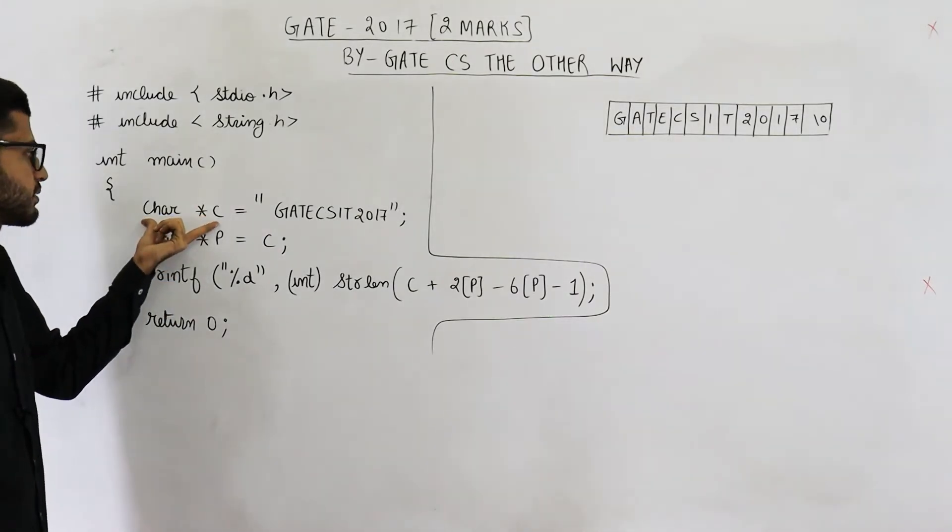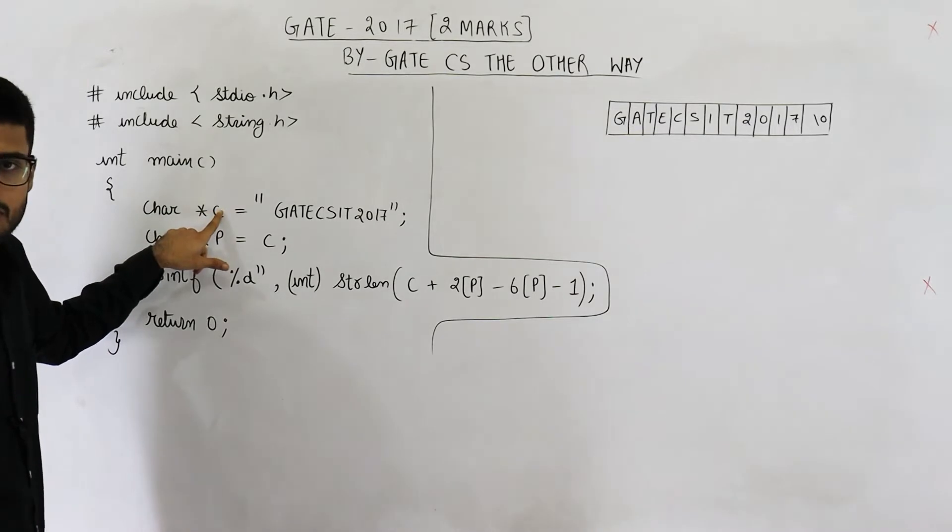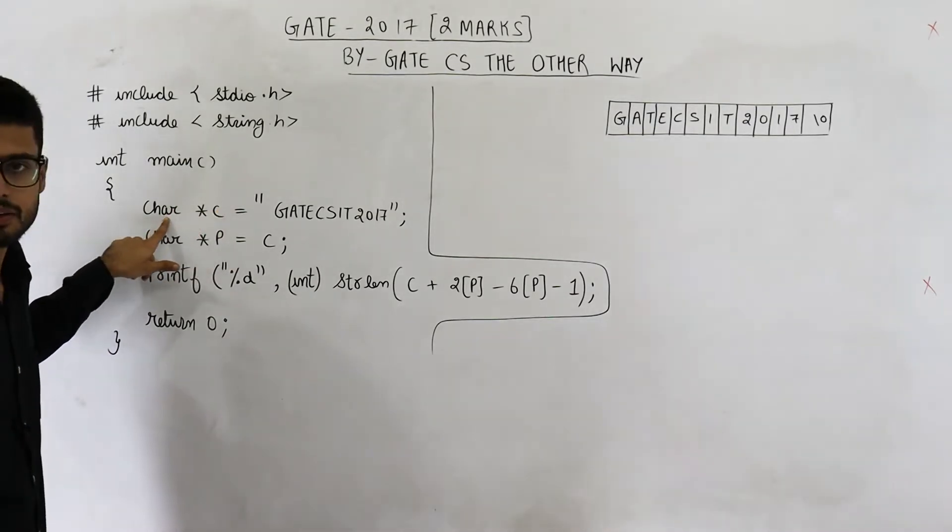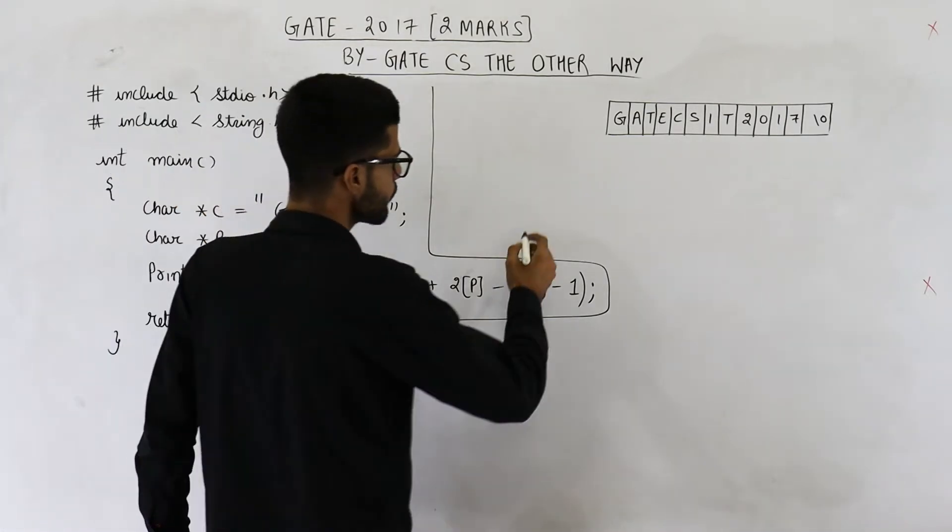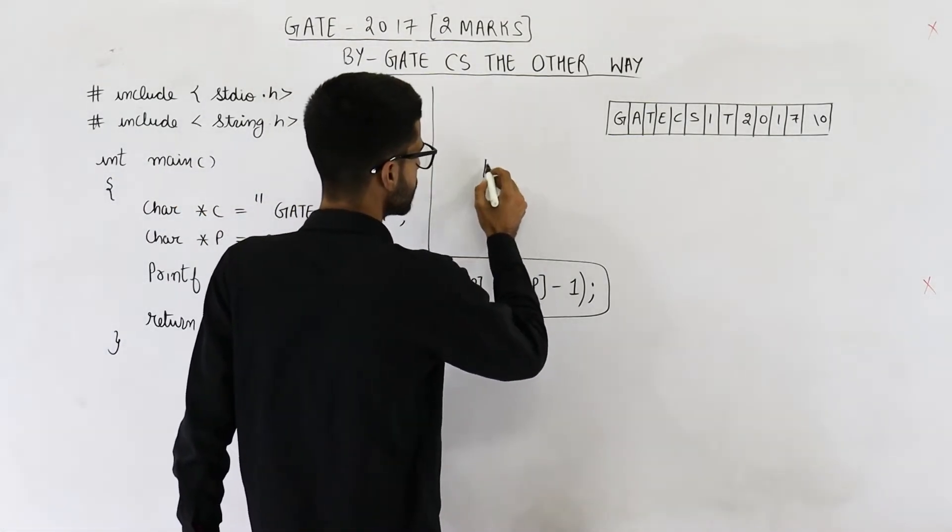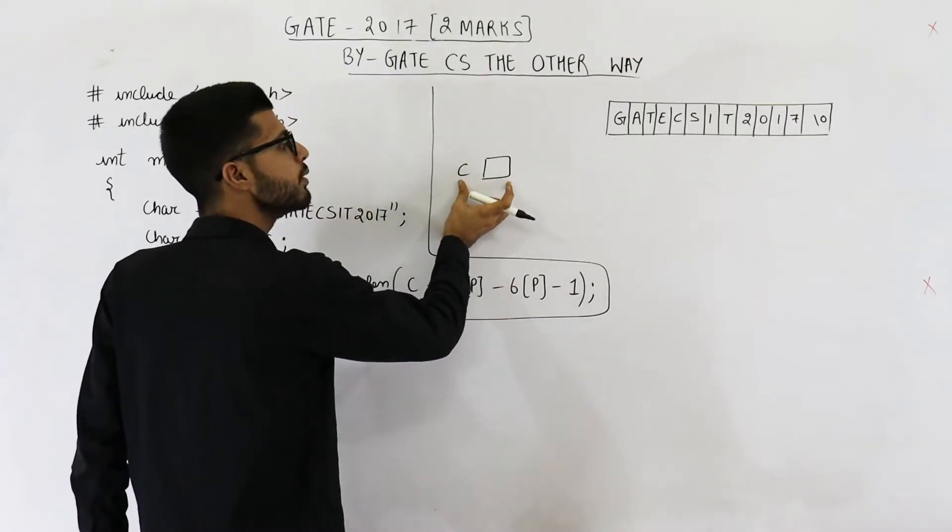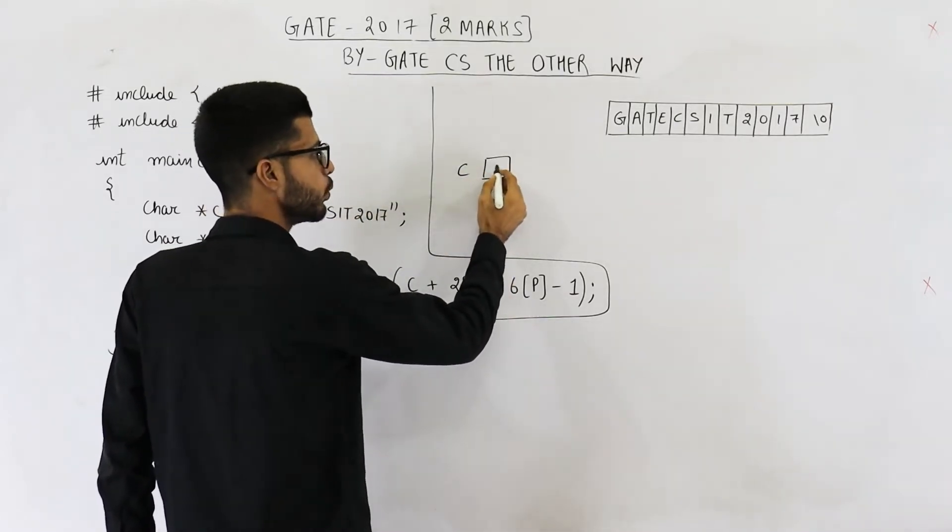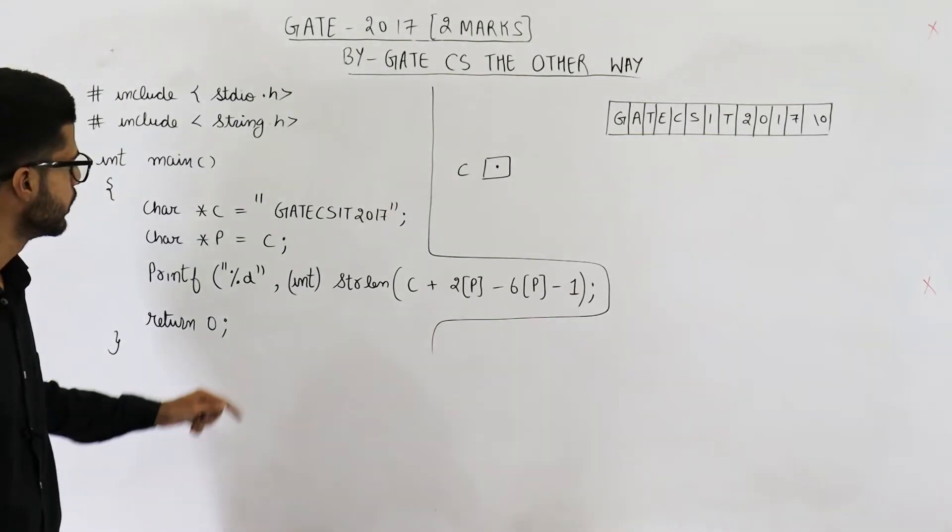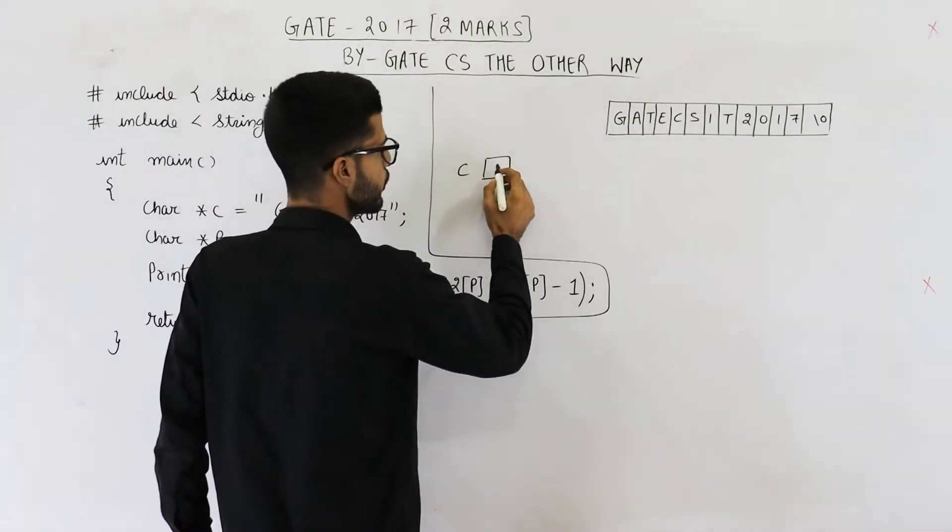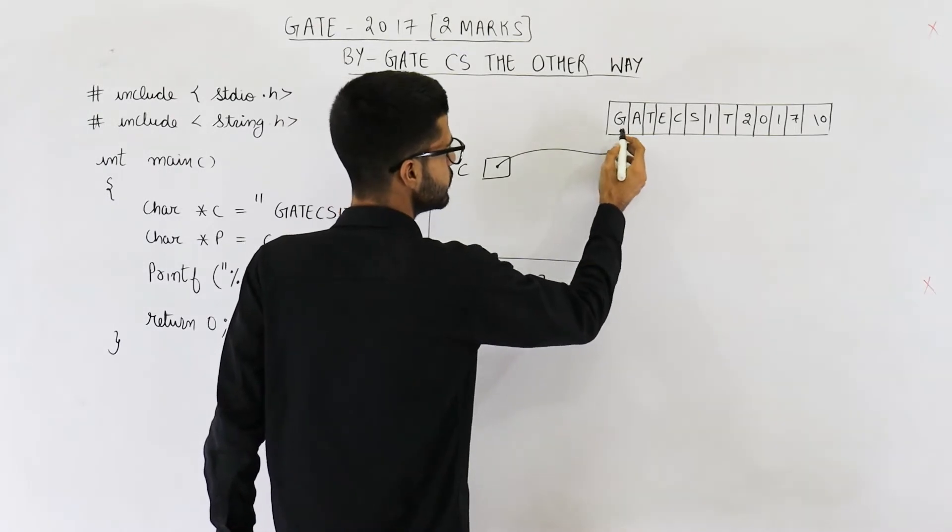Then char star c, what is the meaning of this line? C is a variable which is of the type pointer to some character. Suppose this is variable C. It can point to some character. Which character is it pointing to? The first character of this string. So this C will point to this G.